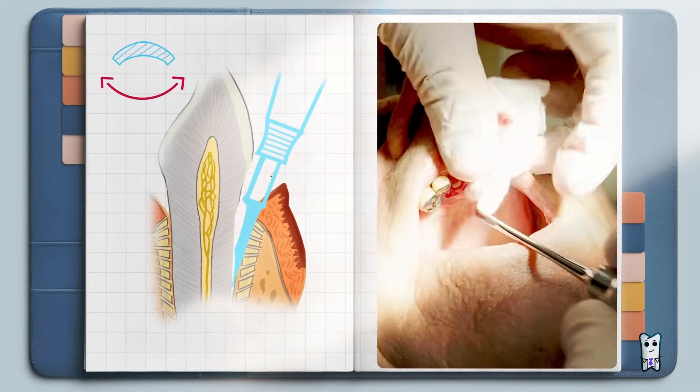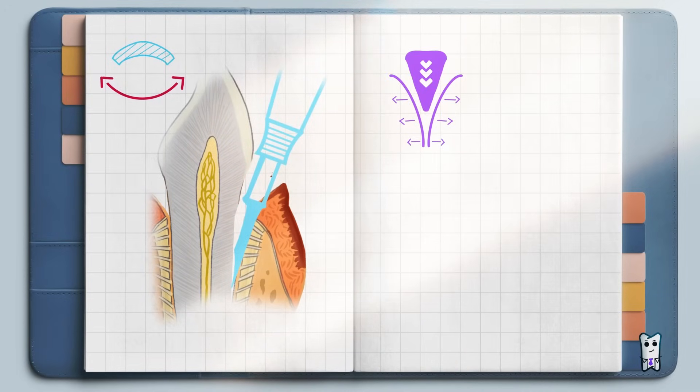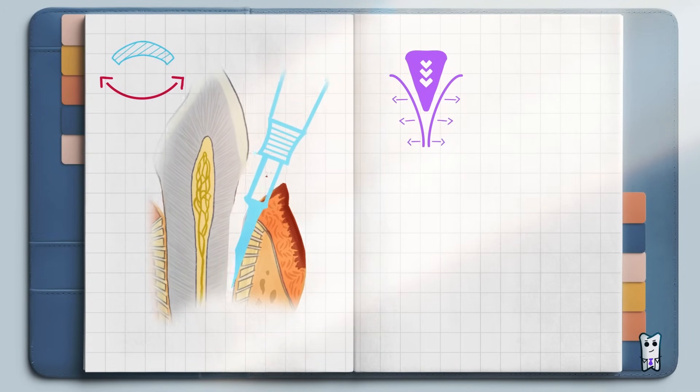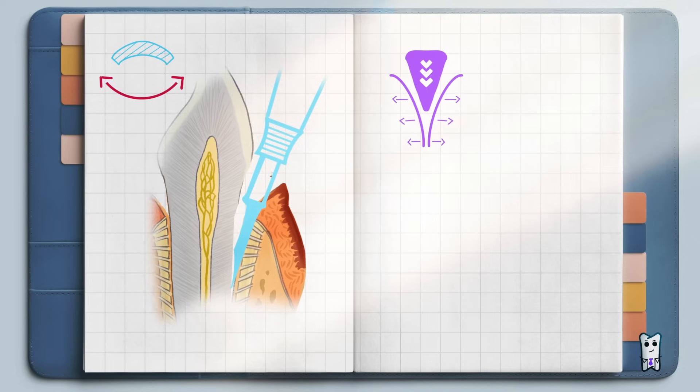This means you have to position it more apically. On the other hand, if you see that the tooth is moving, then you are close to the correct position.